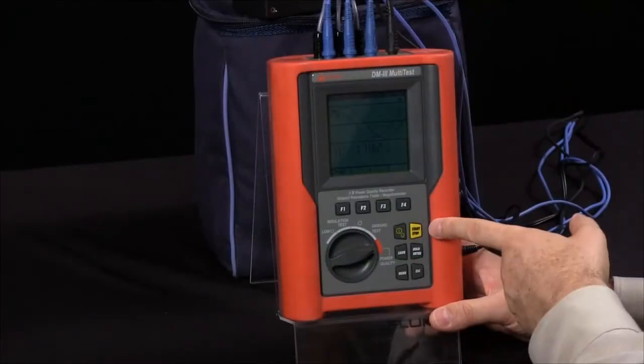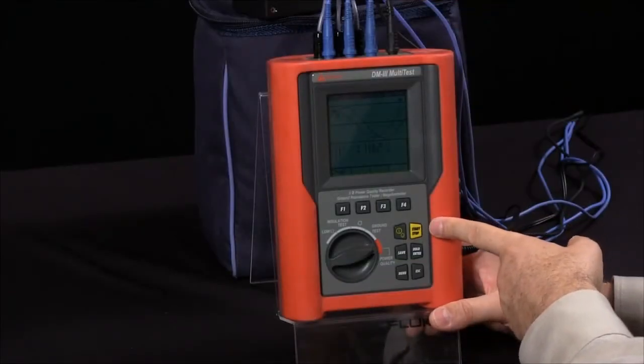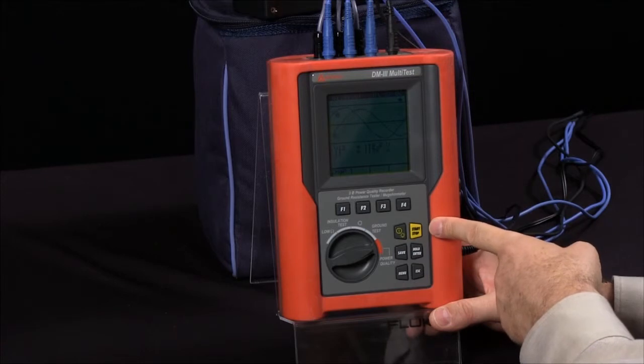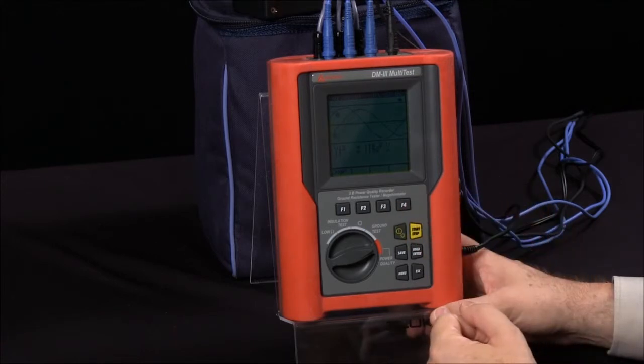With the stop and start button, we can record these settings up to 64 parameters, and we can also download these via the Amprobe download suite.